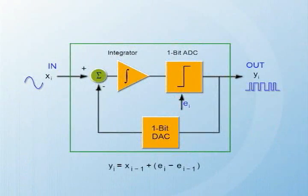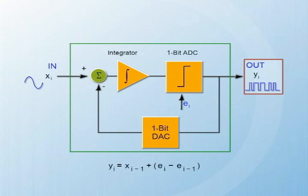Here's an example of a first-order modulator. The signal comes into the modulator into a summing portion of the diagram, then it travels on to the integrator. Once it goes through the integrator, the signal goes through an A-to-D converter — a one-bit A-to-D converter. It then goes around in the feedback loop back to the input summer. The code coming out of this modulator is a one-bit code. It's a coarse code, and there's a lot of noise in there. But believe it or not, this is where the high resolution of the Delta-Sigma converter is accomplished.